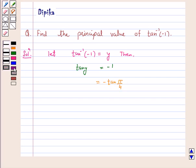And we know that tan of minus theta is equal to minus tan theta. So this is equal to tan of minus pi by 4.